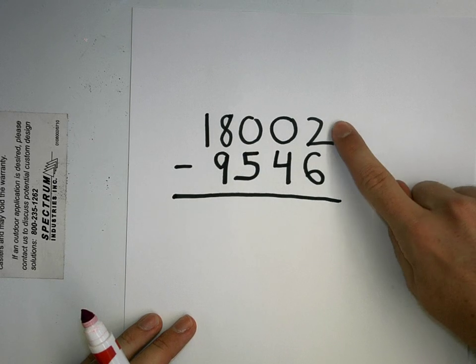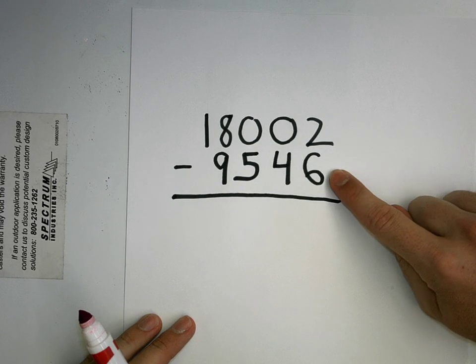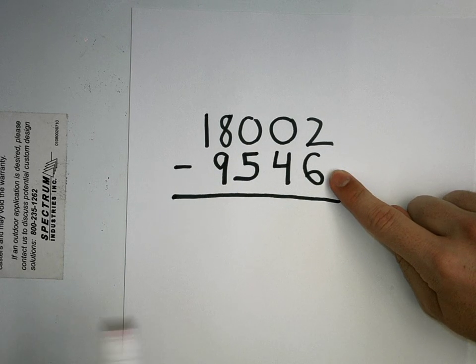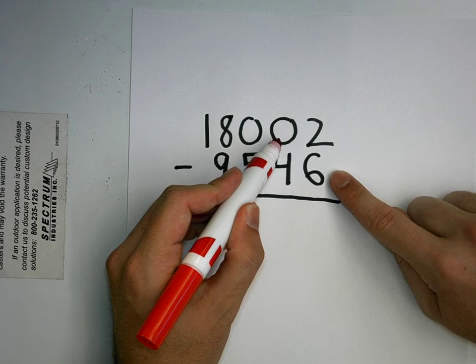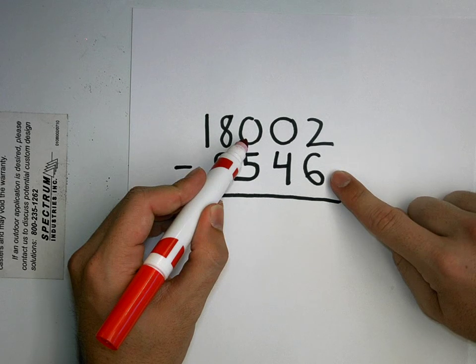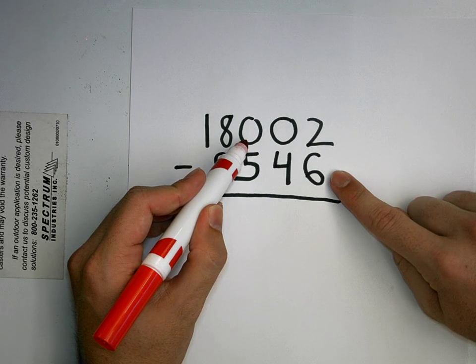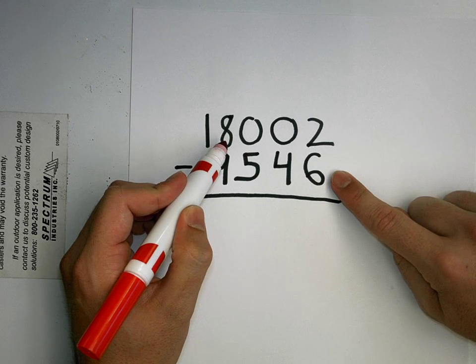So first, two take away six. I can't do two take away six, but look, I can't regroup from my tens, I can't even regroup from my hundreds. I have to go all the way over to the thousands to regroup.